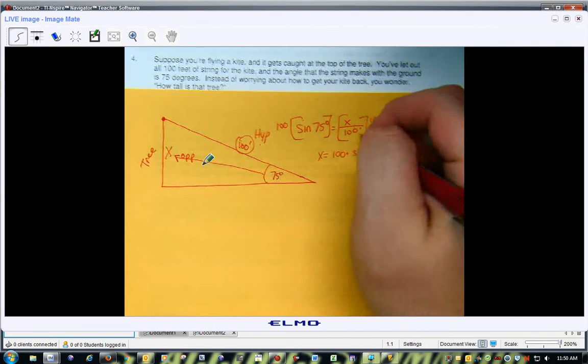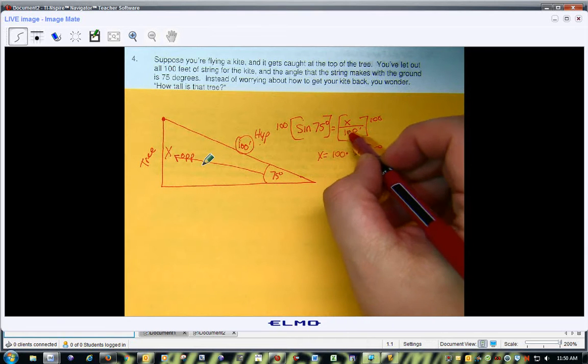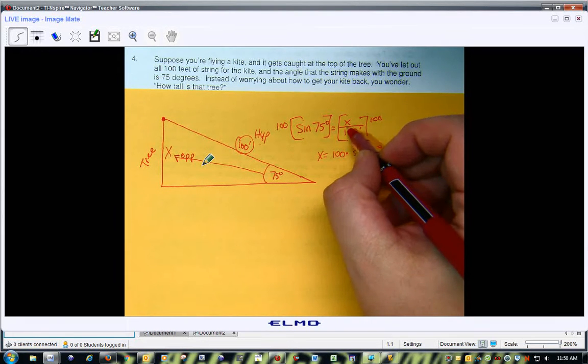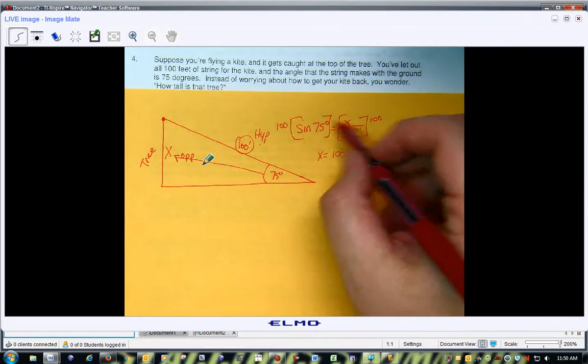Well, since I needed to get x by itself, and since I was dividing, I multiplied by 100. So I multiplied both sides by 100.